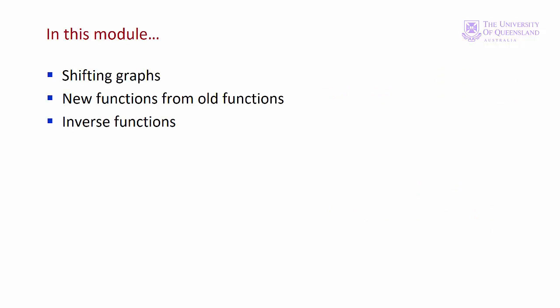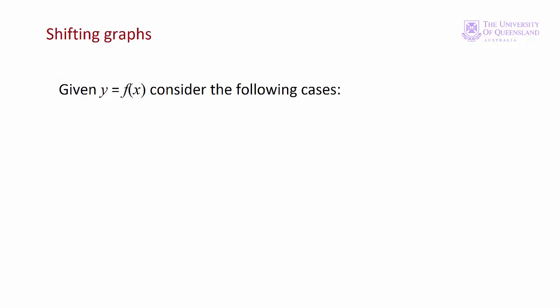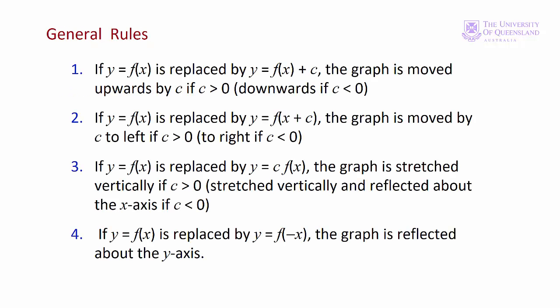In the final module for lecture 3 we'll consider shifting graphs, new functions from old functions, and inverse functions. There are four main operations that shift the graph of a function. First, we can add a constant to the function. Second, we can add a constant to the variable. Third, we can multiply the function by a constant. And fourth, we can multiply the variable by minus 1. These are the rules that tell us how the graph shifts when these operations are performed. Let's look at them in Excel.